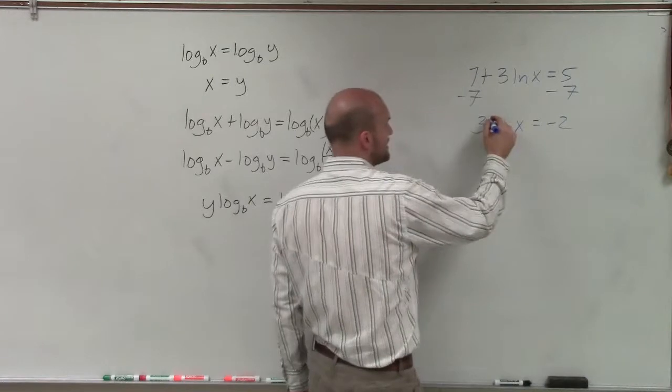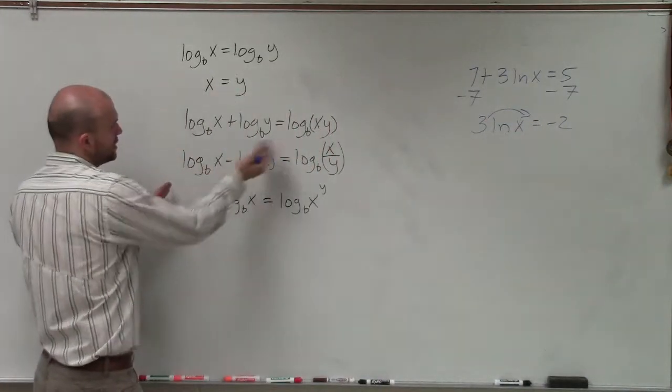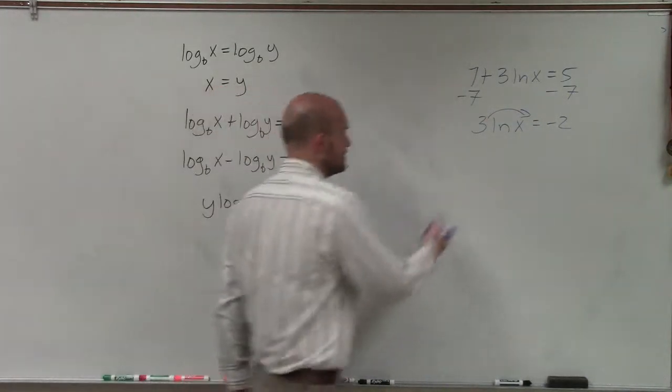Now remember, ladies and gentlemen, this 3 we can rewrite over as our exponent by applying our logarithmic rule here. So therefore, I have ln of x cubed equals negative 2.